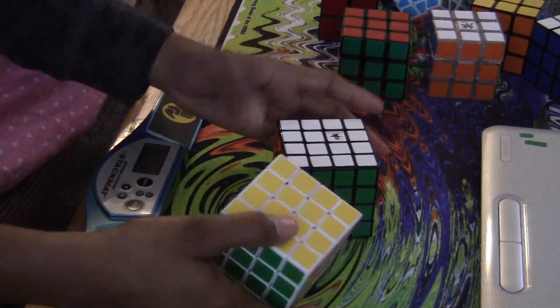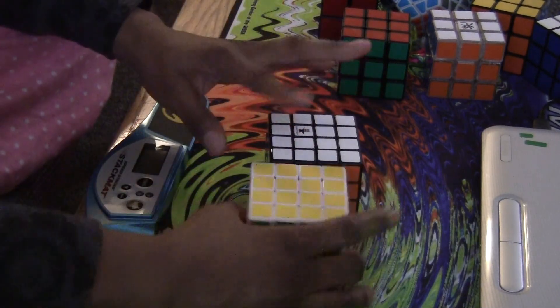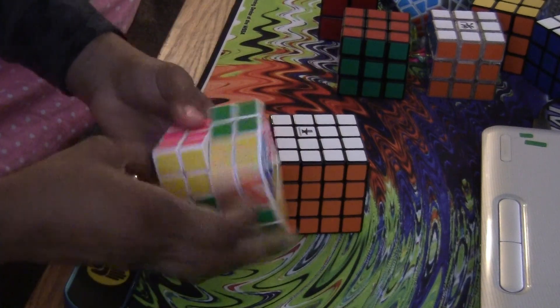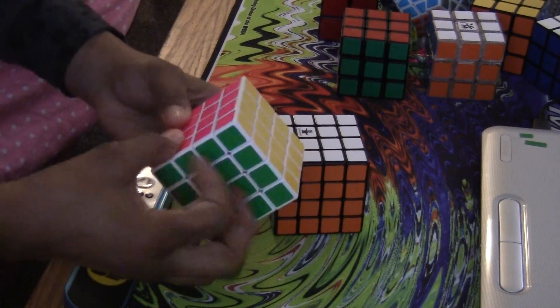And that's about the differences. Just to sum it up, this one is just smoother, locks less. The outer layer feels smoother, so does the inner layer for the Ghost Hand.